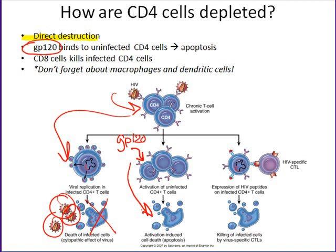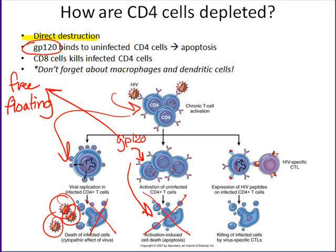GP120 doesn't just have to be present on the virus — lots of free-floating GP120 will start to accumulate in the blood plasma of patients with HIV. You can imagine all this free-floating GP120 just knocking into helper T cells and causing them to undergo apoptosis. That's a huge way to deplete CD4 populations. The third route is that if I have an infected CD4 cell, an HIV-sensitive CD8 cell primed to attack any cell infected with HIV is going to identify that cell as infected and make it undergo apoptosis.